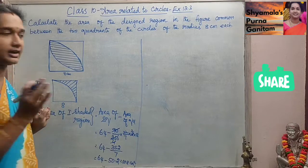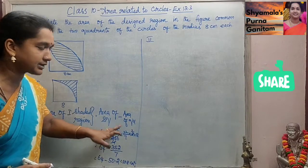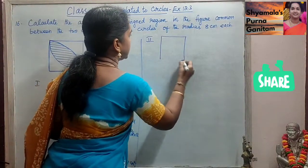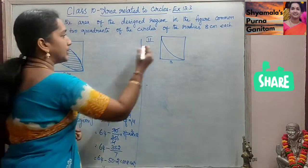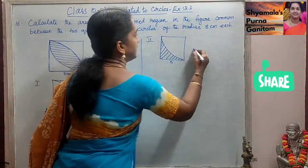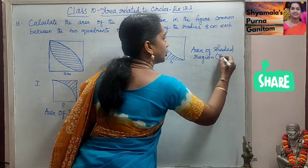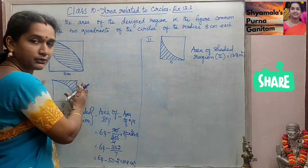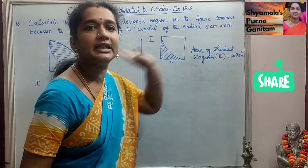This is the area of the first shaded part. The second part uses the same numbers — 64 minus the same quadrant with radius 8 cm — so the second part also gives 13.8 cm². Area of second shaded region = 13.8 cm².